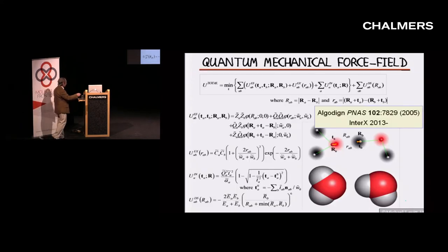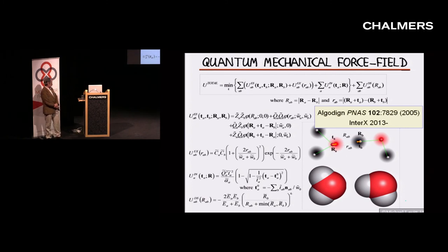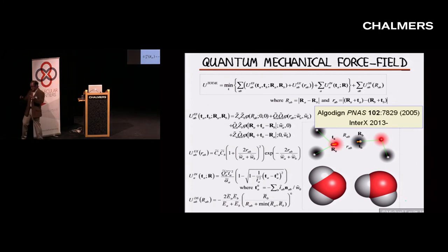Algodyne stopped existing in about 2009. But recently, together with Roger Kornberg, we've sort of picked it up in another company doing very similar things called InterX. The idea is to derive much better energy functions — maybe not so much for simulations of proteins and nucleic acids, but very importantly for drugs.